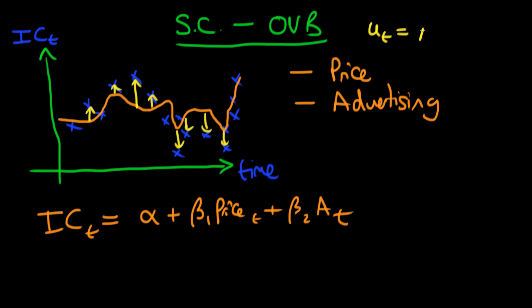...error at time t is related to our error at time t minus one. So this rho in our AR1 process would be greater than zero. Don't worry if you don't understand what an AR1 process is—I included it for completeness. But we'd find that our error at time t is related to our error at time t minus one because if we make a positive error at time t, we're likely to make a positive error for the next period as well.